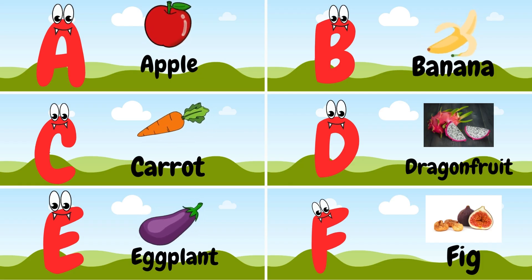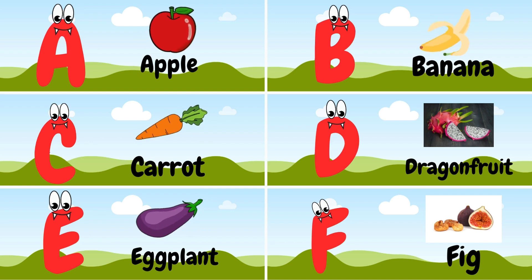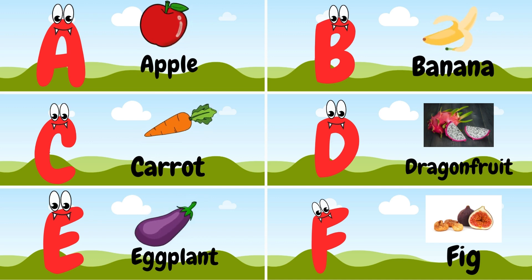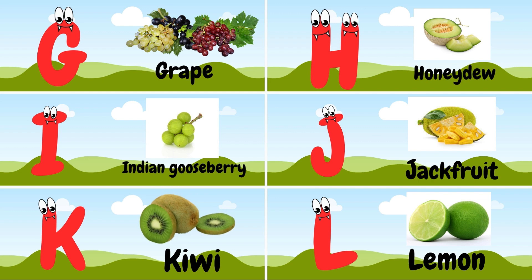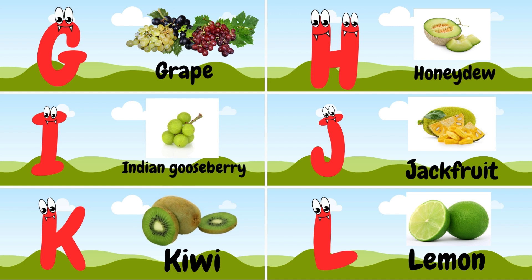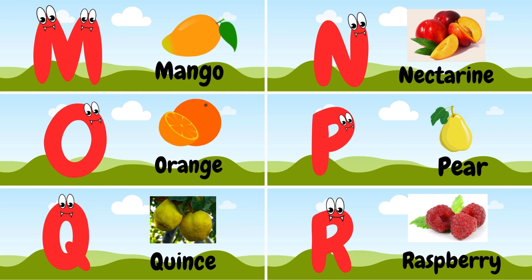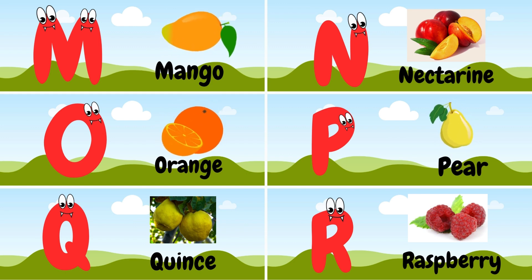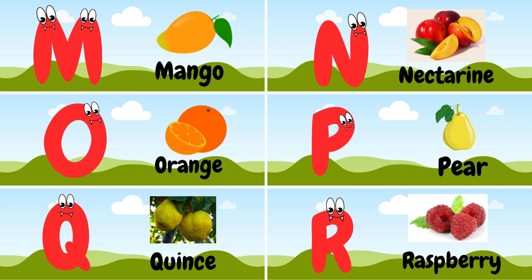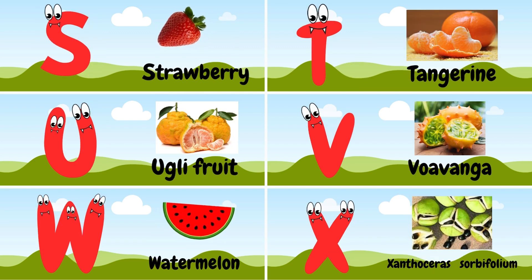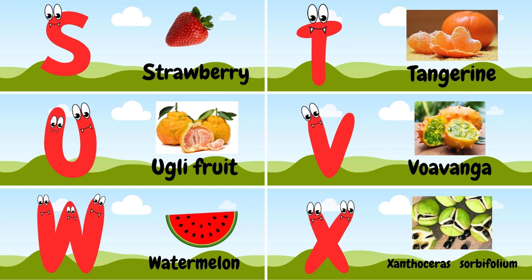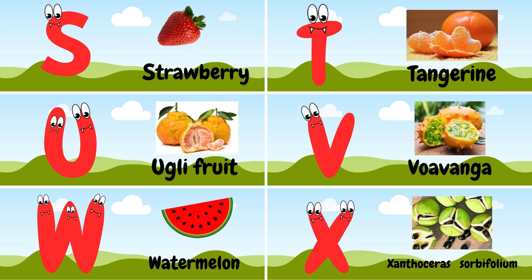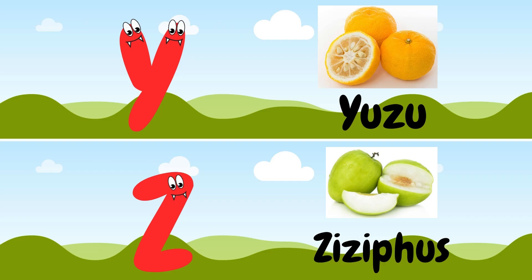A for apple, B for banana, C for carrot, D for dragon fruit, E for eggplant, F for fig, G for grape, H for honeydew, I for Indian gooseberry, J for jackfruit, K for kiwi, L for lemon, M for mango, N for nectarine, O for orange, P for pear, Q for quince, R for raspberries, S for strawberry, T for tangerine, U for ugly fruit, V for vuanga, W for watermelon, X for xentosaurus, Y for yuzu, Z for zisyphus.